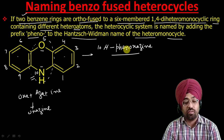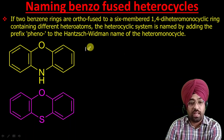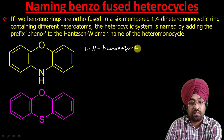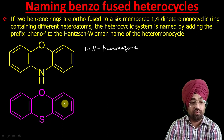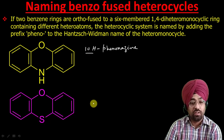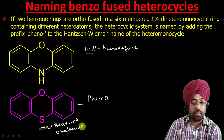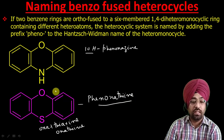Now let us do one more example. This compound also satisfies the same conditions — six-membered dihetero monocyclic ring, benzo-fused by two benzene rings — so we use the prefix 'pheno.' It has no saturated center, so we skip that. Its name comes from oxa + thia + 'ine,' giving oxathiin. The full name is phenoxathiin.